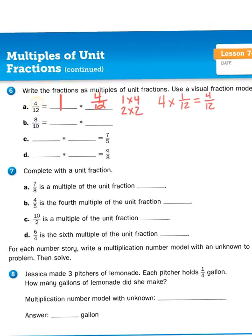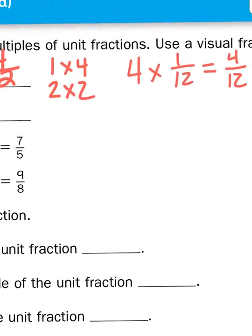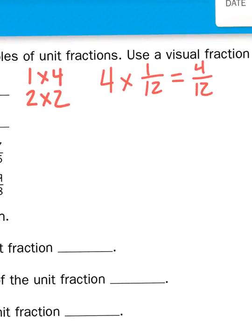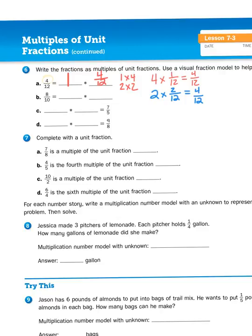Now, there's another way I can think about that, because I know that two times two gives me four. So, I could also represent this problem like this. I have two groups, and in each group, I have two-twelfths. Two times two gives me four, so that would give me four groups of twelfths, otherwise known as four-twelfths.